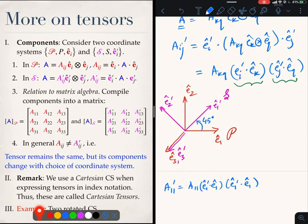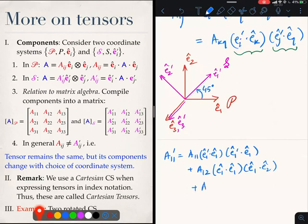A11 prime equals A11 E1 prime dot E1 E1 prime dot E1 plus A12 E1 prime dot E1 E1 prime dot E2 plus A22 E1 prime dot E2 E1 prime dot E2. I have to sum over L and k.